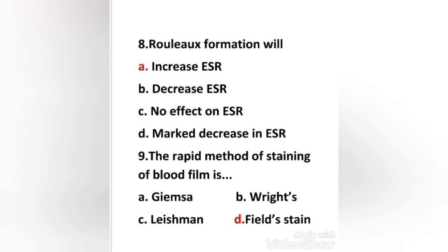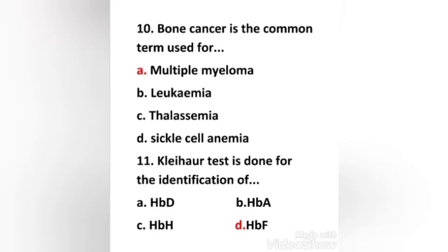Next question: the rapid method of staining of blood film is Giemsa stain, Wright stain, Leishman stain, or Field stain? The right answer is option D: Field stain. It is used for staining thick blood films to discover malarial parasites. It consists of two parts — Field A stain and Field B stain. Field A consists of methylene blue and azure I in phosphate buffer, and Field B stain contains eosin Y in phosphate buffer.